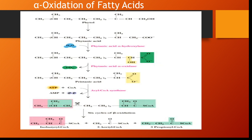After alpha oxidation, it will continue with the normal beta oxidation cycle. Finally, the end product of alpha oxidation of fatty acid will lead to the formation of isobutyl-CoA, 3 molecules of acetyl-CoA, and 3 molecules of propionyl-CoA. This is the final end product we get from oxidation of fatty acid.